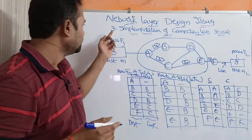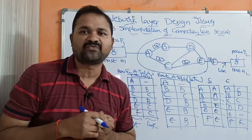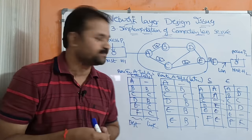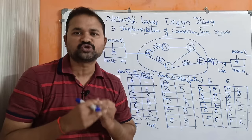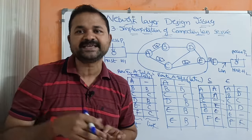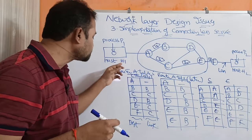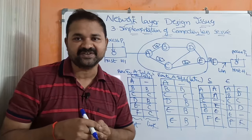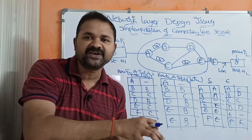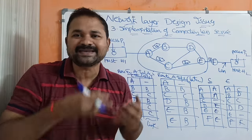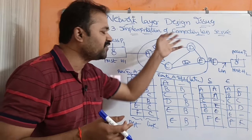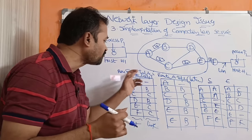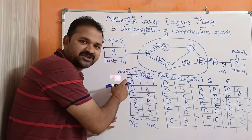Now let us see about the third design issue — implementation of connectionless service. Using the same diagram, host 1 wants to send a large message to host 2. That message is split into four packets. Initially, host 1 sends the packet to its nearest router, that is A. Connectionless service means there is no connection between the source and destination.